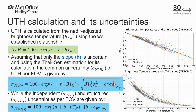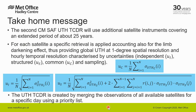From this we can calculate the common uncertainty of UTH per field of view, provided by this equation, which takes into account also the Limb-Darkening effect, while for the independent and structured uncertainties per field of view we are using the last equation on the slide.